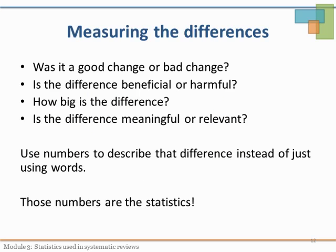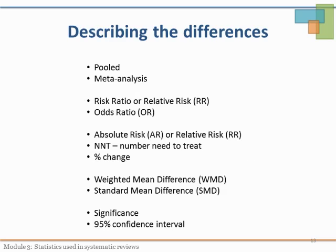In randomized controlled trials, the key is measuring the difference between the groups. We want to know: was the change a good change or a bad change? Was it beneficial or harmful? Was it a big difference or not? Even if children in a school feeding program gained 0.2 kilograms more over one year than those without the program, is that difference meaningful? It may have been proven statistically different, but we want to know whether it's actually meaningful or clinically relevant. Some of you may be familiar with the terms used in Cochrane systematic reviews to describe what happened between the two groups after pulling together all the results from the studies — many of these terms will be discussed later in this module.